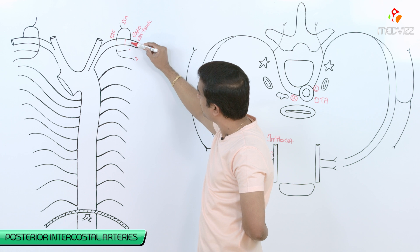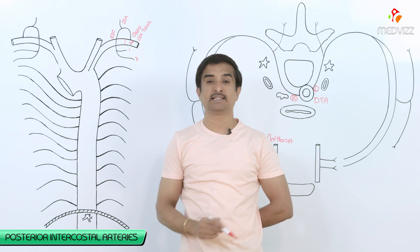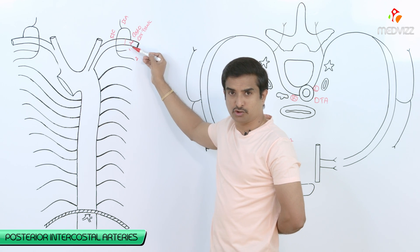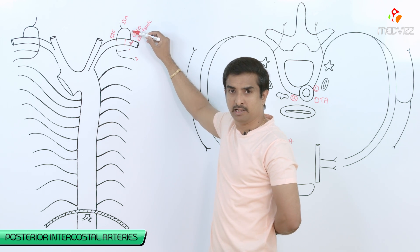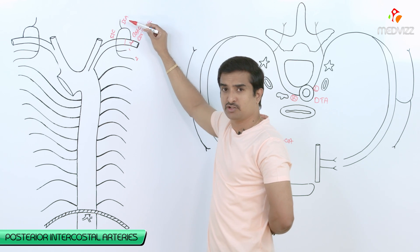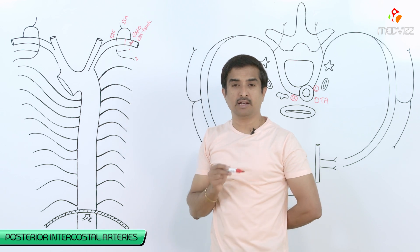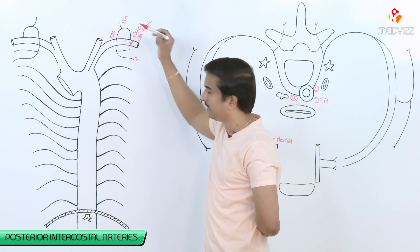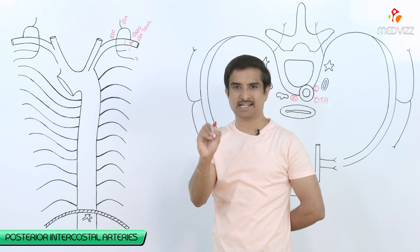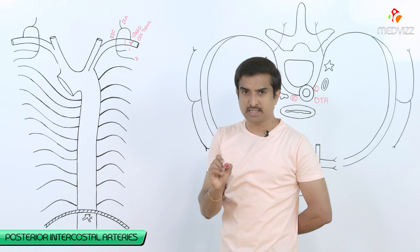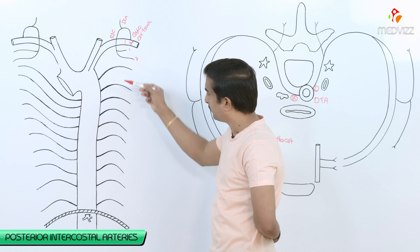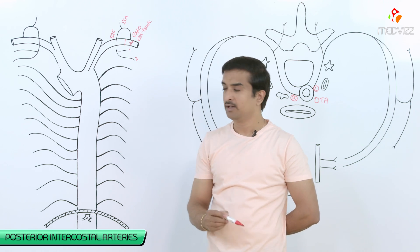The costocervical trunk arises from the second part of the subclavian artery. The second part of the subclavian artery gives off the costocervical trunk, which gives off two branches: the deep cervical artery and the superior intercostal artery, also called the supreme intercostal artery. The supreme intercostal artery gives branches for the first and second intercostal spaces, which do not receive vascular supply from the descending thoracic aorta.